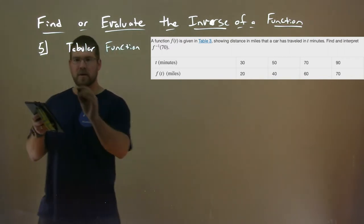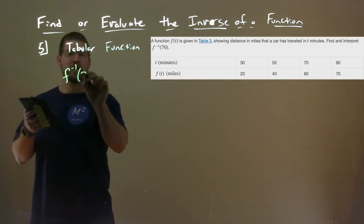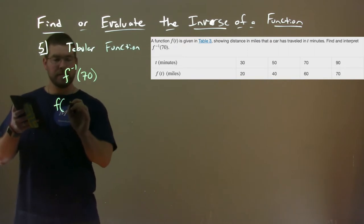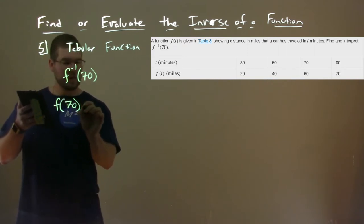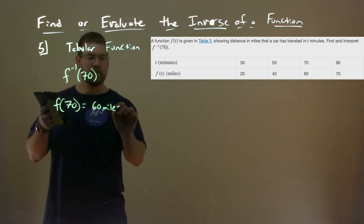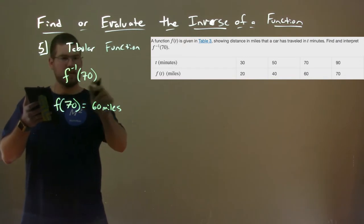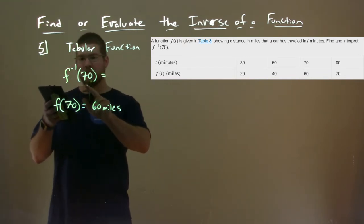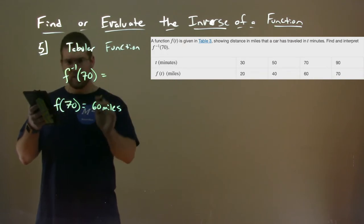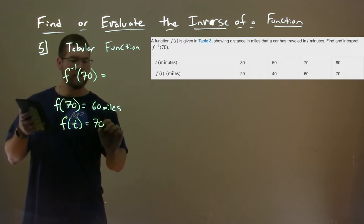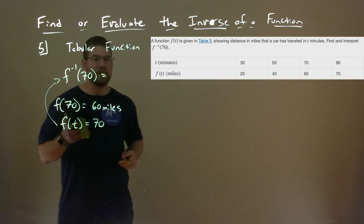But what is f inverse? They're asking us, what is the f inverse of 70? So normally, we would say f(70) means in 70 minutes we would travel 60 miles. What's f inverse of 70? Well, look at the output, f(t). So what we want to see is, f of what t equals 70, and that matches with that inverse there.